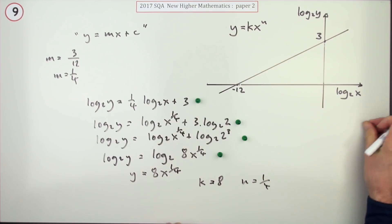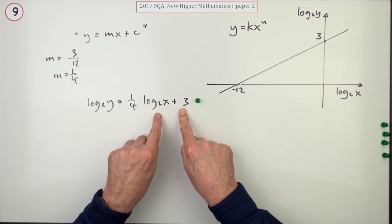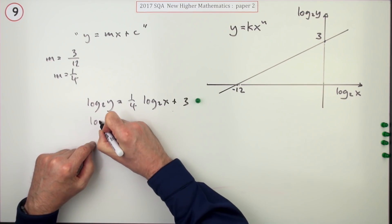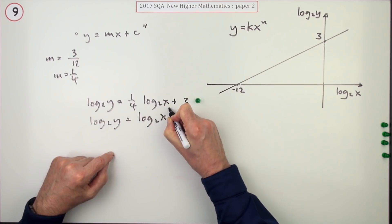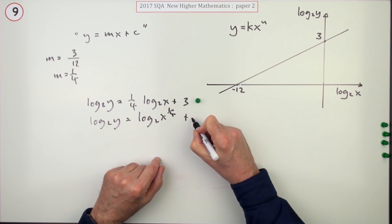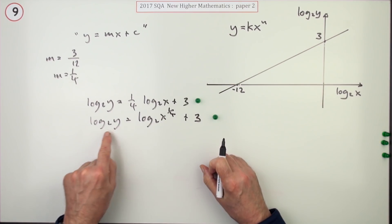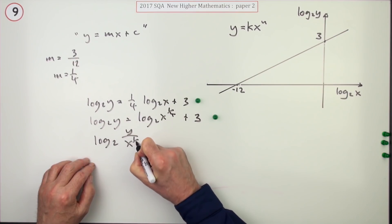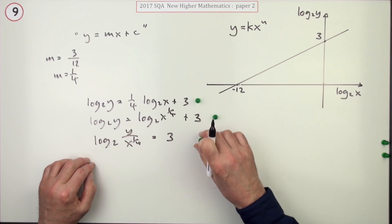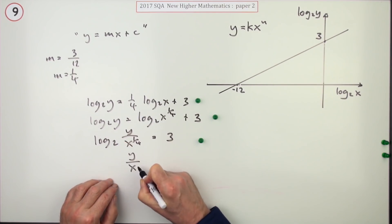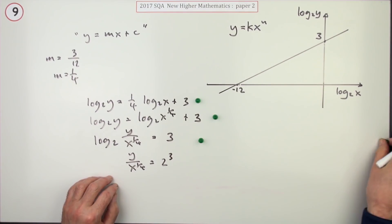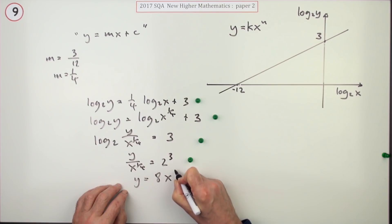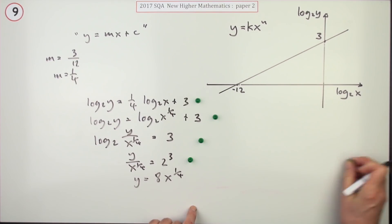The alternative was to leave that 3 alone, join those logs together. So log base 2 of Y is log base 2 of X to the quarter plus 3. That was a mark. Take that across and subtract, and if you're subtracting them it'll be the logarithm of the quotient, so it'll be Y over X to the quarter equals 3. That gets a mark. Then using the inverse, Y over X to the quarter will be 2 to the power 3. That gets the next mark. Finish it off: Y equals, and that's 8X to the power of quarter, and then you get the two values.